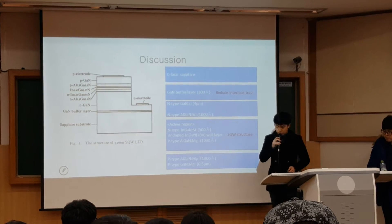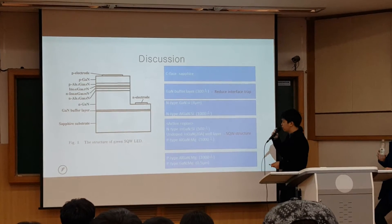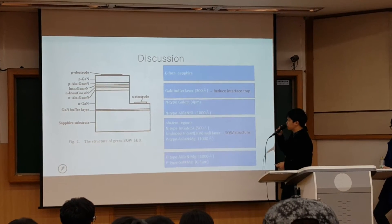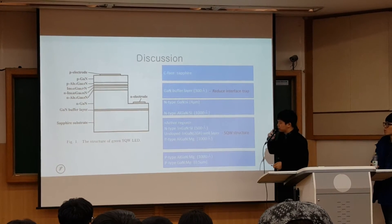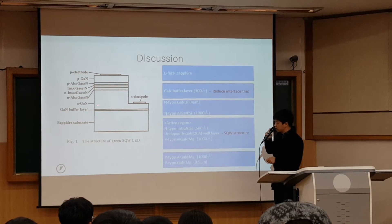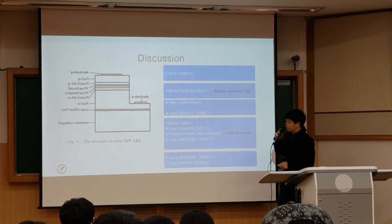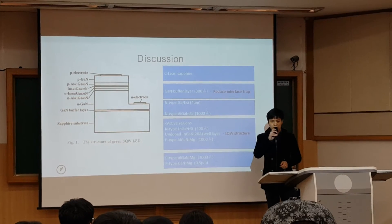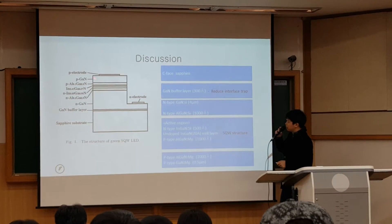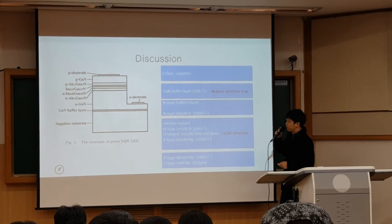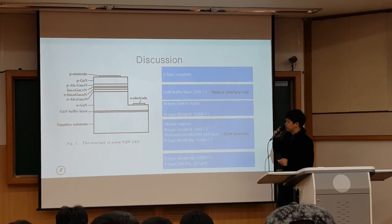From now on, I'm going to show the structure of green single quantum well LEDs. From a Sapphire 0-0-0-1 orientation — we call that C-plane — of 2-inch diameter, used as the substrate of these devices, a gallium nitride buffer layer is grown at a low temperature, about 550°C. These devices have many layers; each layer has the function of helping transportation of carriers and enhancing quantum efficiencies.